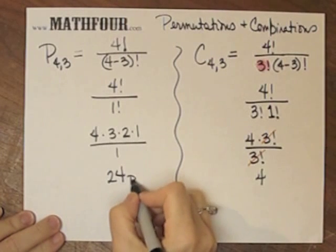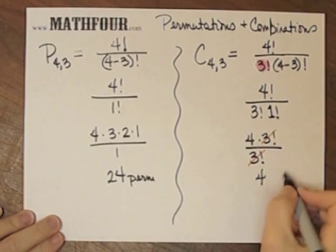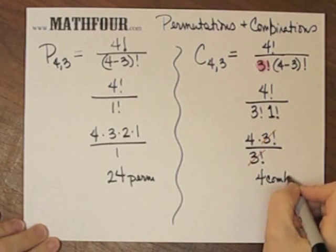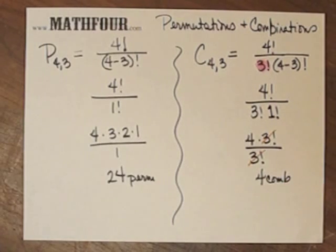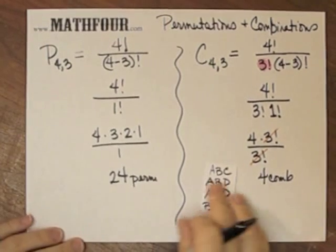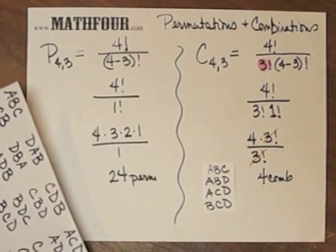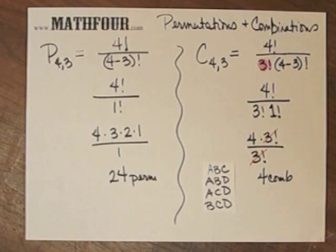So I have 24 permutations and four combinations. And sure enough, here's my four guys versus this amazingly huge thing over here that was the 24.